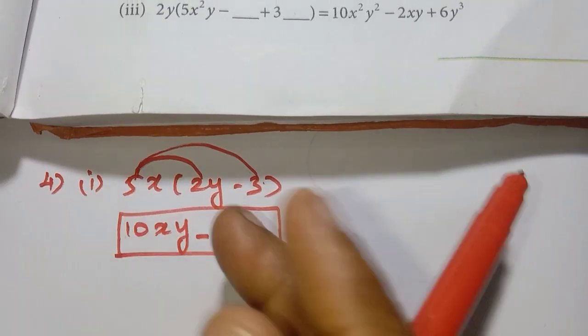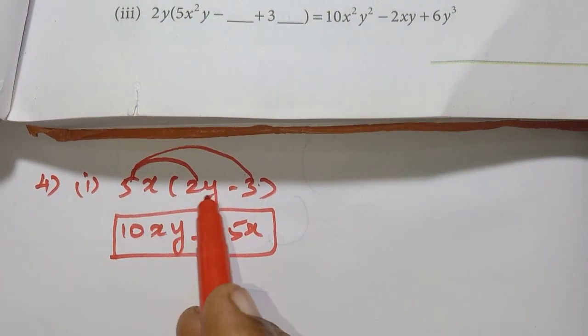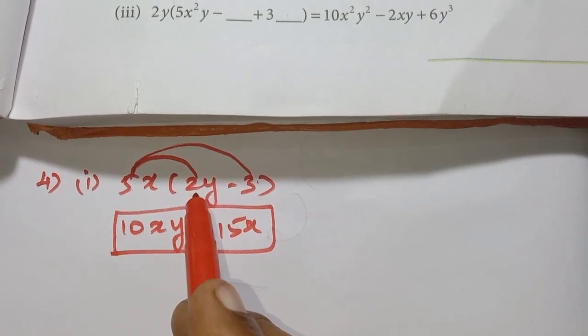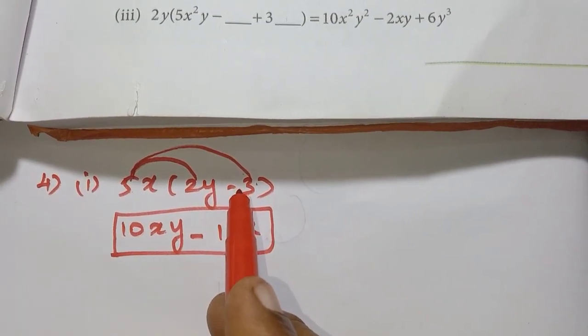If you write it out: 5x into 2y, then 5x into minus 3, you get the same result: 10xy minus 15x.